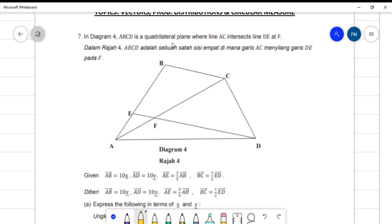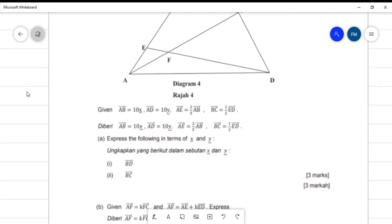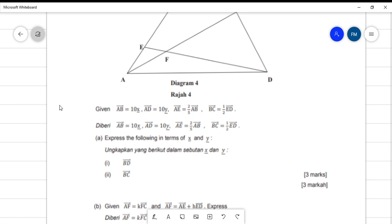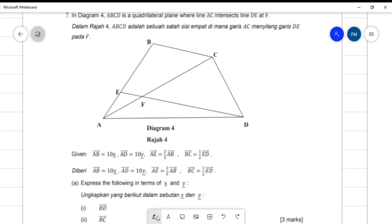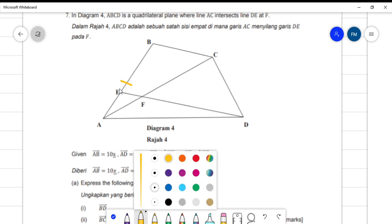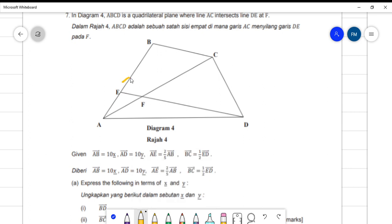ABCD is a quadrilateral where line AC and ED intersect at F. AB is 10 vector x, so A to B is 10 vector x. AD, A to D, is 10 vector y. Then AE equals to AB.